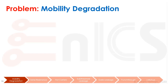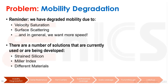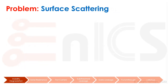My first category I call mobility degradation. We have degraded mobility due to velocity saturation and surface scattering, and in general we just want more speed. We want to have as much mobility as possible, because that gives us more speed and makes our digital circuits work faster. There are a number of solutions currently being used or developed, such as strain silicon, Miller indexes, and using different channel materials. The first problem in mobility degradation I want to talk about is surface scattering.